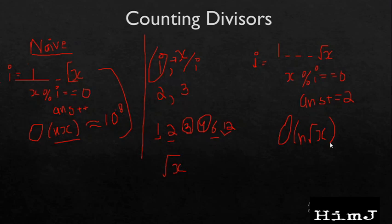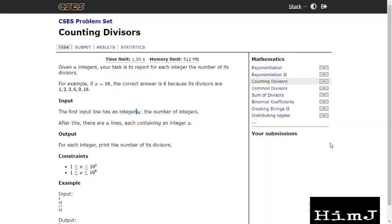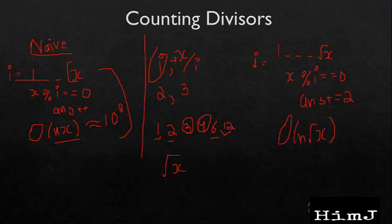We have to do this for n integers. So time complexity will be O(n*sqrt(x)). Now let us check whether this will pass or not. So n is 10^5 and sqrt(x) will be 10^3. So it will evaluate to 10^8. So this approach might get accepted. But why settle for less if we can do better.